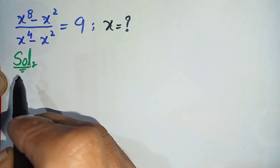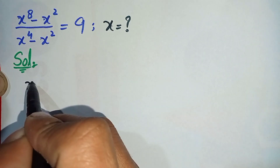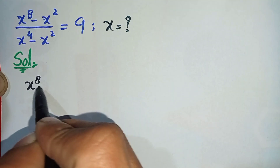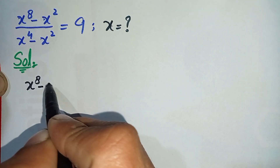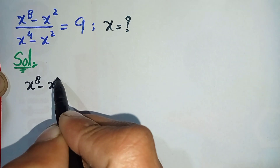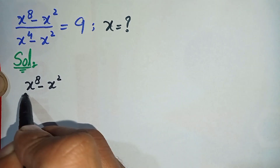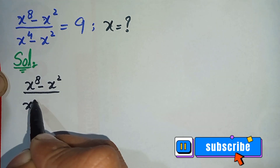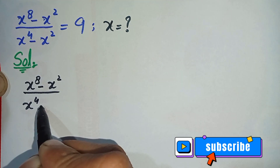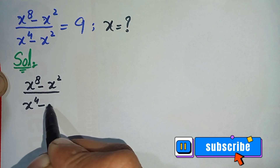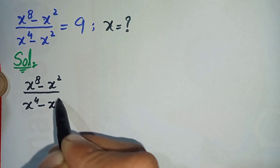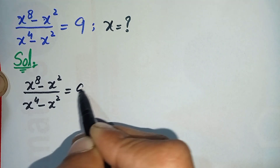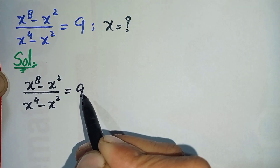So the question is: x raised to the power 8 minus x squared, divided by x raised to the power negative x squared, is equal to 9.